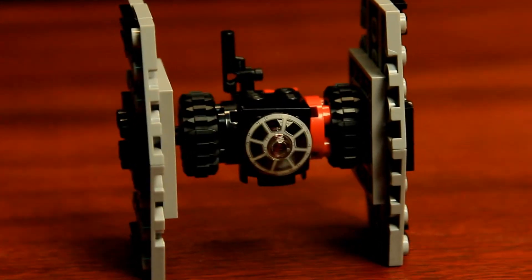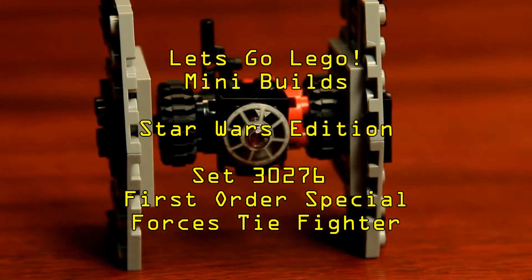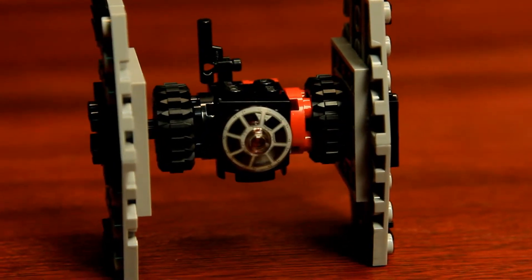I think that about wraps it up for today's episode of Let's Go LEGO. This was the LEGO Star Wars Set 30276, The First Order TIE Fighter, from Star Wars Episode VII, The Force Awakens.